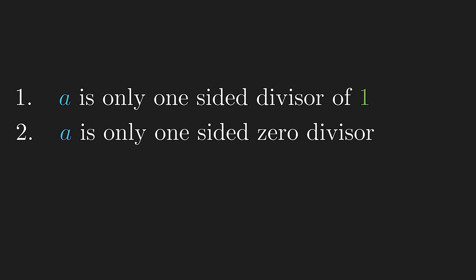In some sense, that is good news, since most rings that we will deal with, if an element divides 1 from 1 side, then it is necessarily a unit. And if it is a 0 divisor from either side, then it is a both-sided 0 divisor.